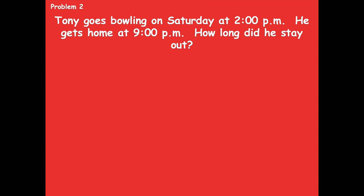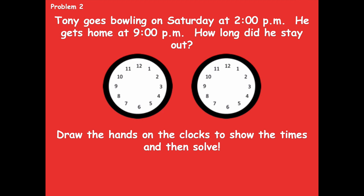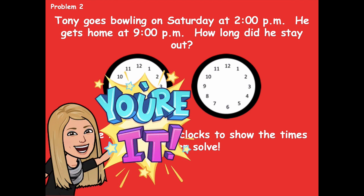Let's take a look at problem two. Tony goes bowling on Saturday at 2 p.m. He gets home at 9 p.m. How long did he stay out? On these two clocks, you're going to show 2 p.m. on one and 9 p.m. on the other, draw those hands, and then solve how long he stayed out. Pause the video, solve this problem, and then click play when you're ready to go over it together.